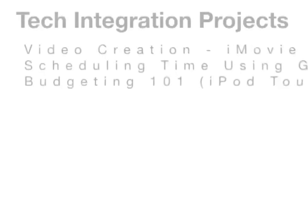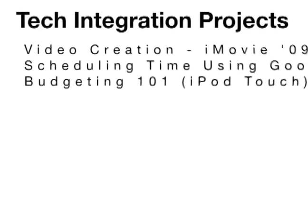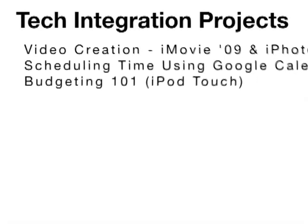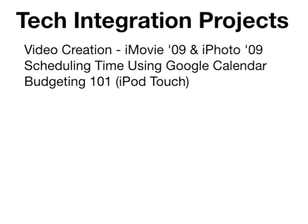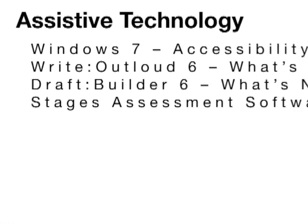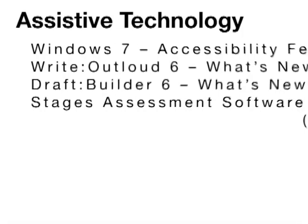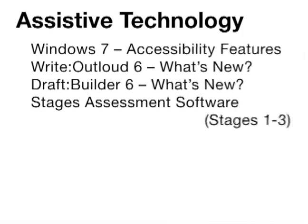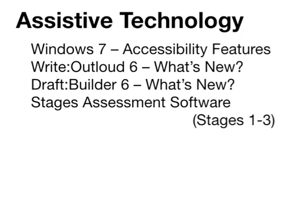For tech integration projects, we've got Video Creation using iMovie 09 and iPhoto 09, scheduling time using Google Calendar, and budgeting using Money for iPhone and iPod Touch. For assistive tech, we've got Windows 7 accessibility features, Write Out Loud 6 What's New, and Draft Builder 6 What's New. We've also got Stages Assessment Software, Stages 1 through 3.